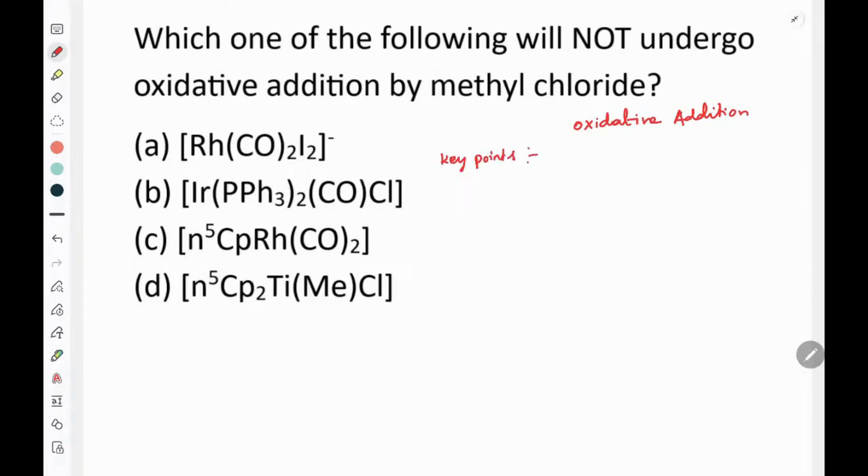First, two key points. When the metal is in a low oxidation state, it can undergo oxidative addition. Let's check each one. The metal in the lowest oxidation state will undergo oxidation, so the oxidation state will increase by two.